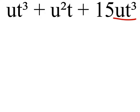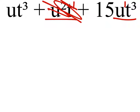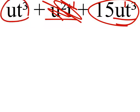What about this term? We don't care about the number in front, or the coefficient. All we're really concerned about are the exponents of the letters, in this case u and t. u has an exponent of 1, t has an exponent of 3. This u has an exponent of 2, and the t has an exponent of 1. So this one is not a like term, which means we can't combine it with this term or this one.